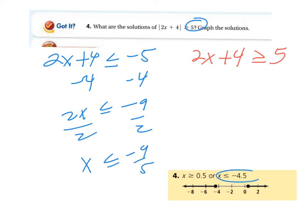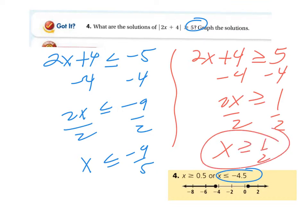Divide the 2. Again, notice, dividing by positive. x is less than or equal to negative 9 halves. Your book went with negative 4.5. And here, subtract the 4. 2x greater than or equal to 1. Divide the 2, and x is greater than or equal to 1 half. Again, your book went with the decimal form. And the graph, closed dots, right? An or situation. So, heading out in each direction.